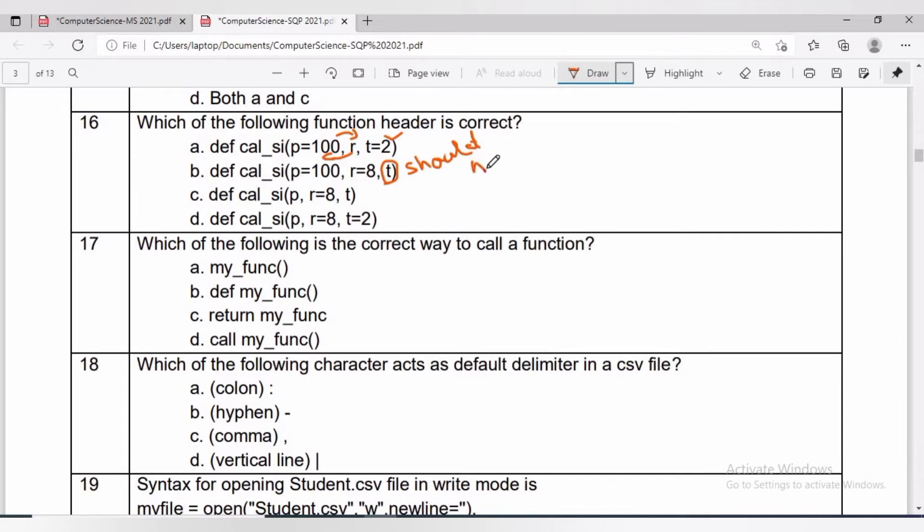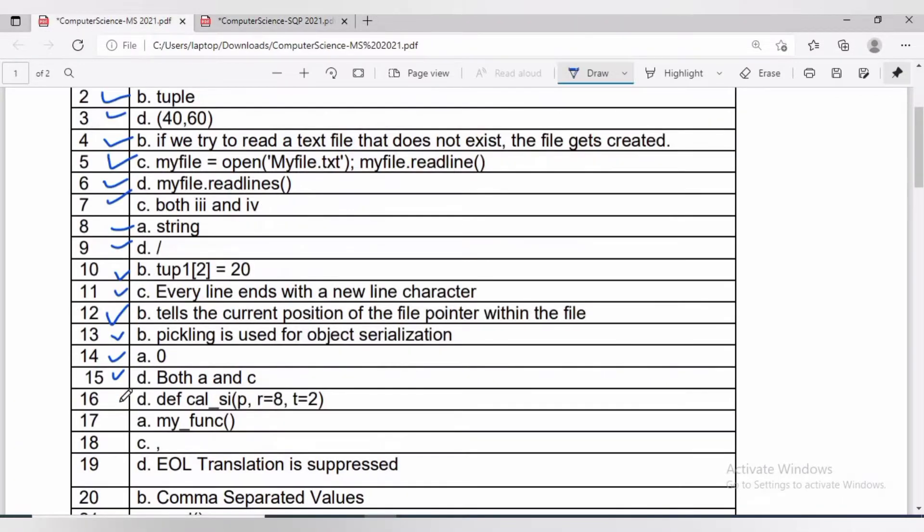One important thing we must know about default parameters: we cannot have a default value unless all parameters appearing on its right have default values. In the first case, t=2, which is the rightmost parameter, but we should have a default value for R before assigning a default value for P. In the second and third cases, same issue. The answer will be D, which has R=8 and T=2.